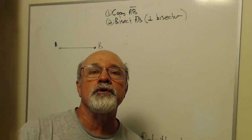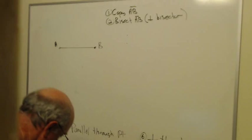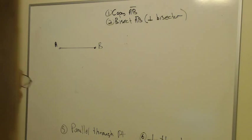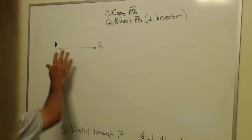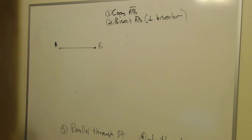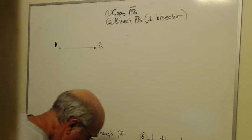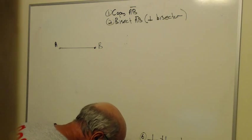Okay, here are the six constructions for your quiz on Monday. Our first construction is we're going to make a copy of segment AB, which means we're going to make a new segment that's congruent to the original.